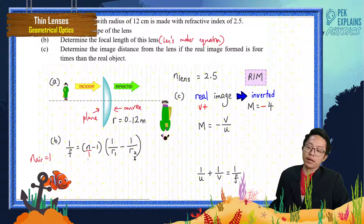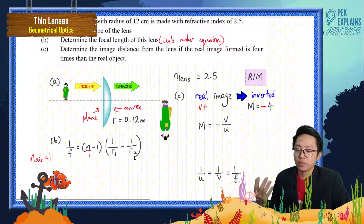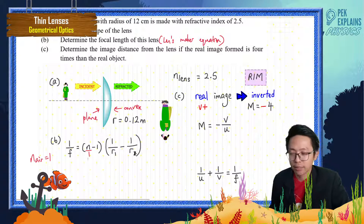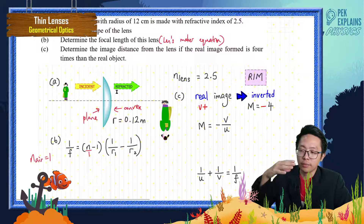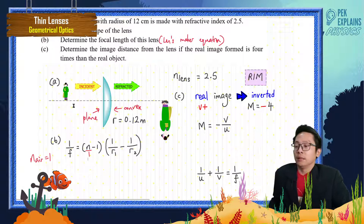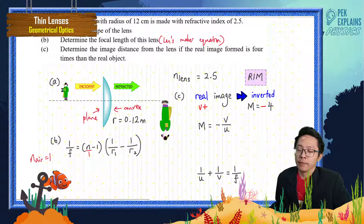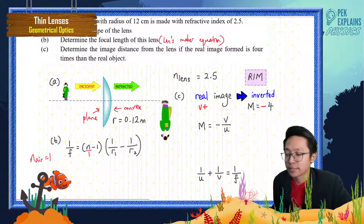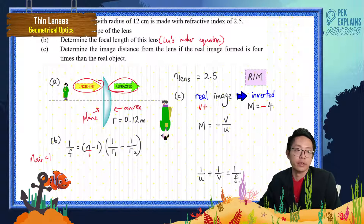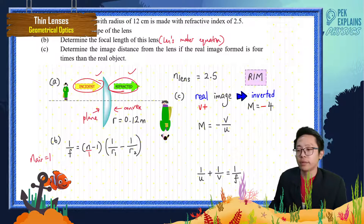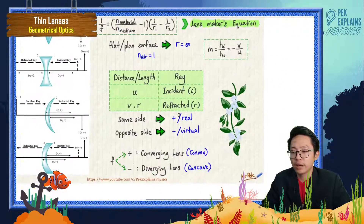Which surface is R1 and which is R2 depends on where the object is. I normally put my object on the left-hand side. To determine the sign of each radius, you must first draw the incident ray and refracted ray — always draw these two first.